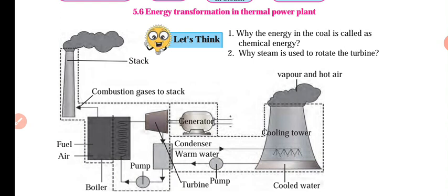To summarize: steam is used to rotate the turbines. The process can be explained through a flow chart involving a water tank and boiler.